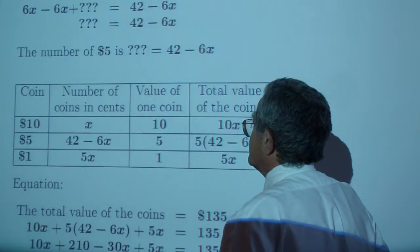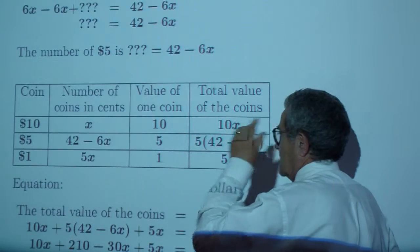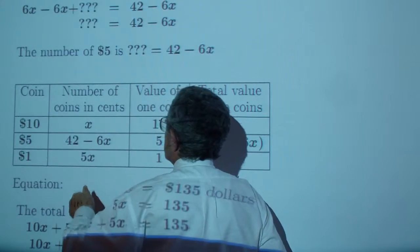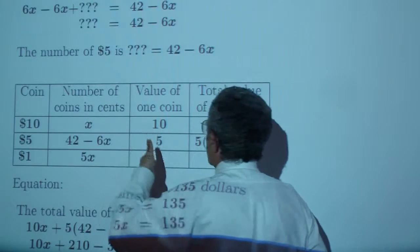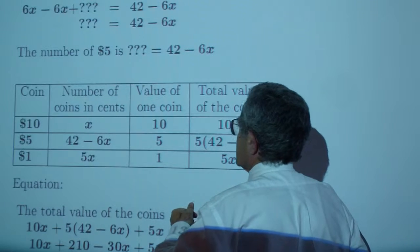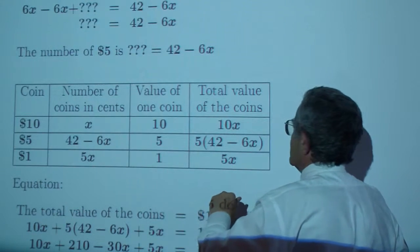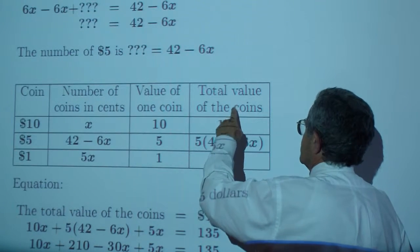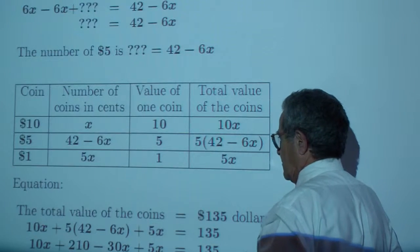And if I put it in a nice little table, I have the denomination of the coins, the number of coins, the value of each coin. Or was it dollars? It was dollars, I think. Dollar bills. And the total value of each of them.